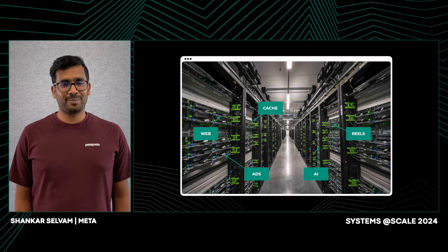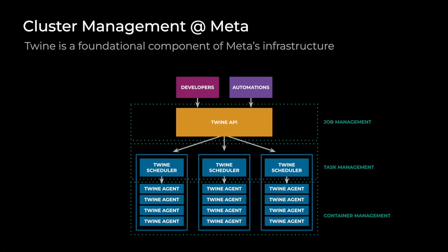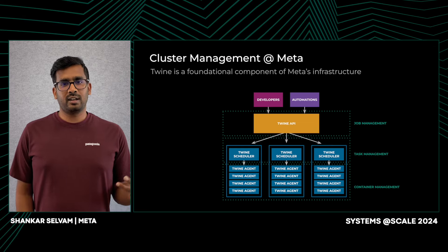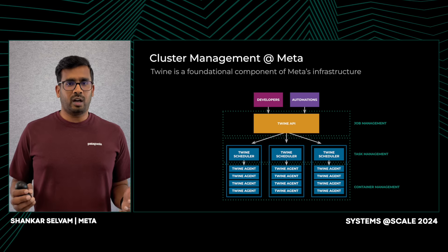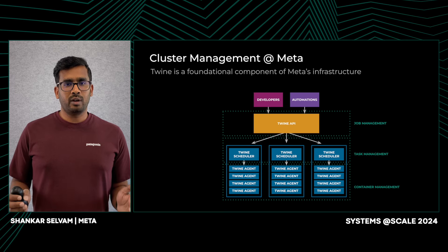Twine is the cluster management system at Meta. Twine has a multi-layered architecture with different layers handling different levels of abstraction. At the bottom, we have Twine agents running on each of the hosts in the data centers, and they handle the container lifecycle. On top of that, we have Twine schedulers translating job level operations into task level operations, and they leverage the Twine agents to run those tasks. You can think of tasks as a logical entity of a container. And at the very top, we have the Twine API that handles the job level abstraction and leverages the scheduler for task management.